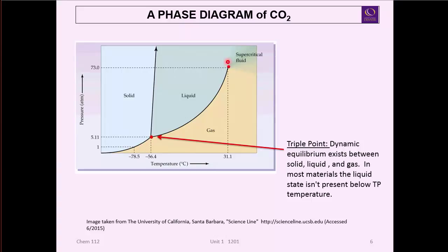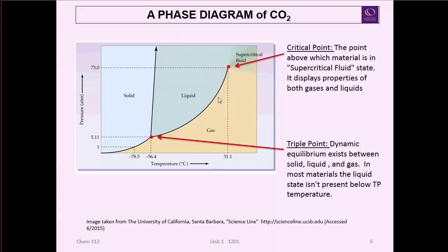The other point is up here at the top where it looks like this liquid-gas line just evaporates. That's called the critical point. This is the point above which materials are in the supercritical fluid state. And a supercritical fluid is basically a fluid that displays both properties of gases and liquids. Usually in terms of how it's like a gas, it's very compressible, and how it's like a liquid - it will often have solubility much like the liquid.